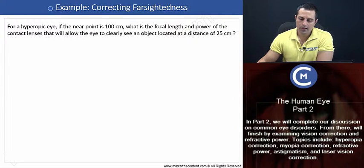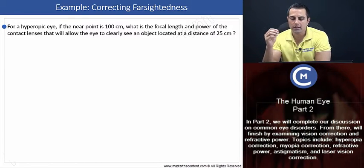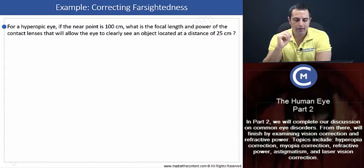Now, beginning up here, example: correcting farsightedness. Let's begin by reading our problem. For a hyperopic eye, if the near point is 100 centimeters, what is the focal length and power of the contact lens that will allow the eye to clearly see an object located at a distance of 25 centimeters?